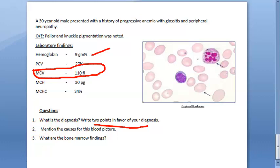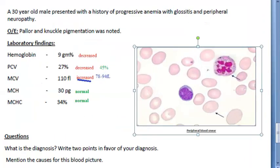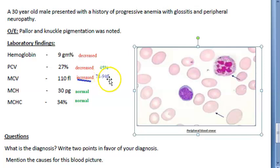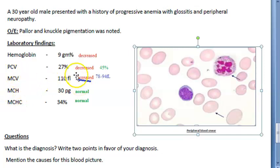Let us look at this now. Hemoglobin is decreased, packed cell volume is decreased, and mean corpuscular volume is more — so the red blood cells are big in size. Normally MCV should be around 94 maximum; here it is 110 femtoliters. The mean corpuscular hemoglobin is normal, and MCHC is also normal.